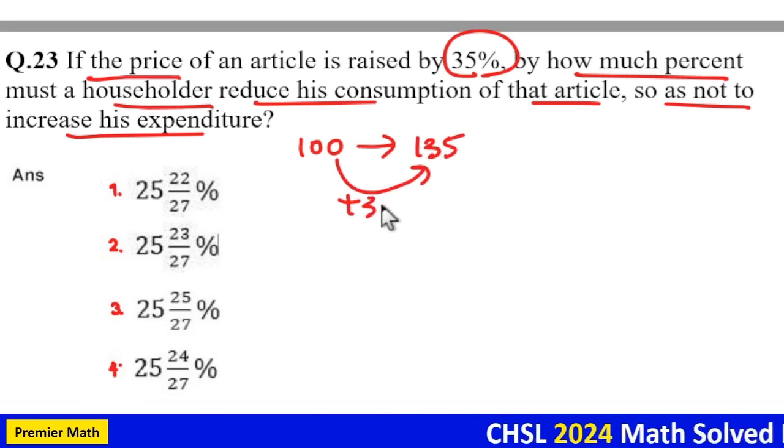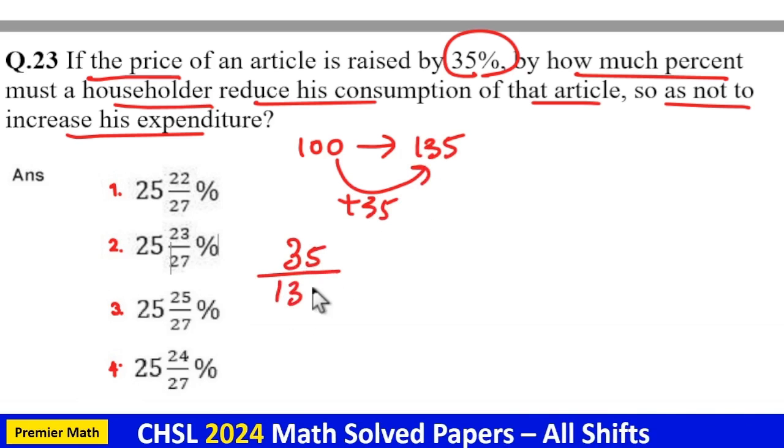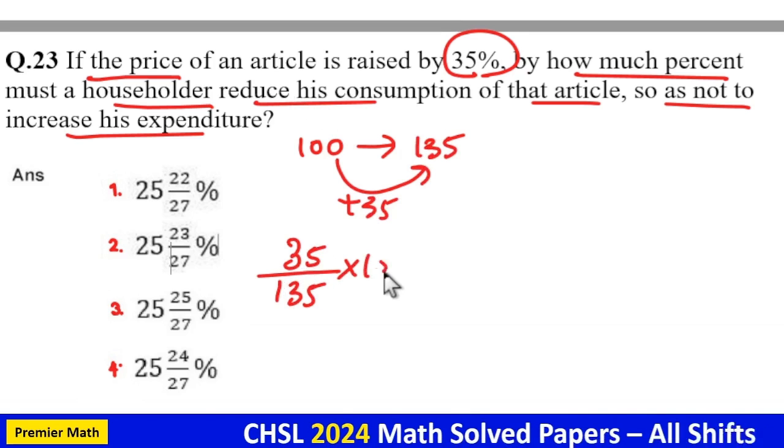So, 35 rupees increment. Now, we should reduce this 35 rupees increment from this increased price 135 in order to maintain the same consumption.